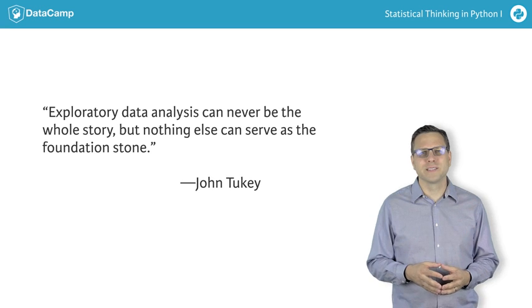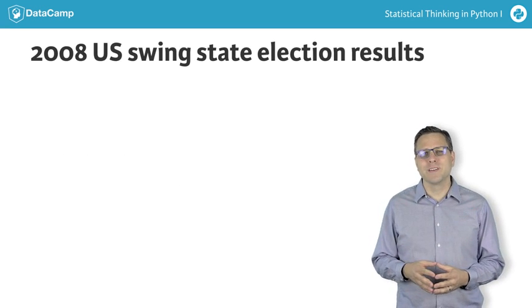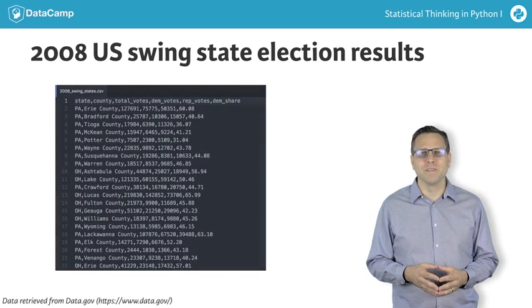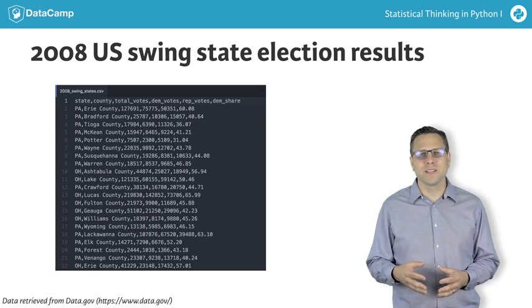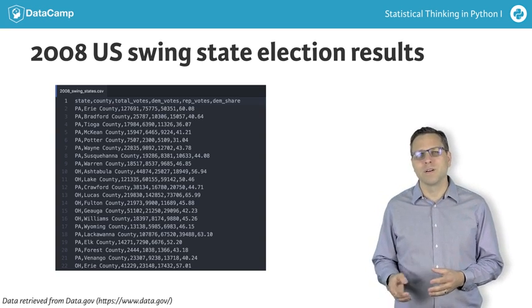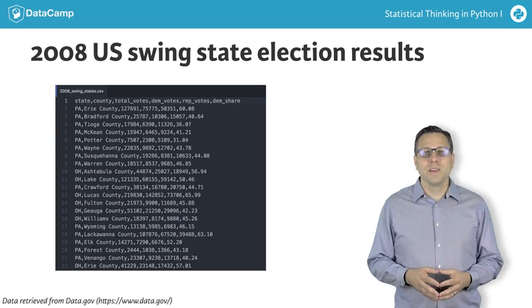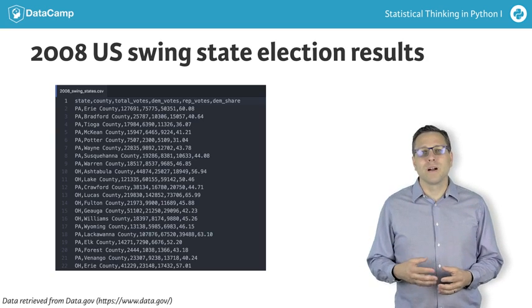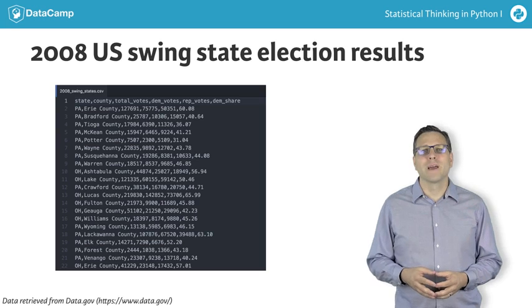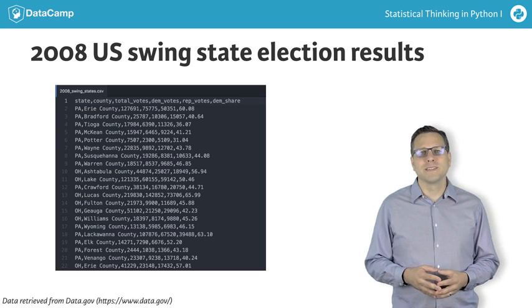Let's consider an example. Here I have a dataset I acquired from data.gov, containing the election results of 2008 at the county level, in each of the three major swing states of Pennsylvania, Ohio, and Florida. These are the ones that largely decide recent elections in the U.S. This is how they look when I open the file in my text editor.